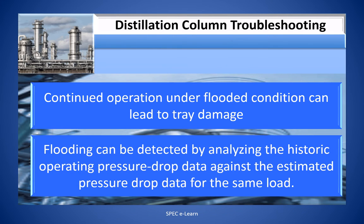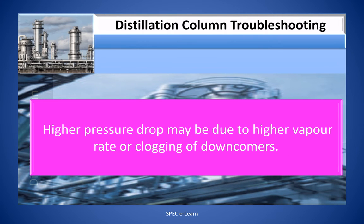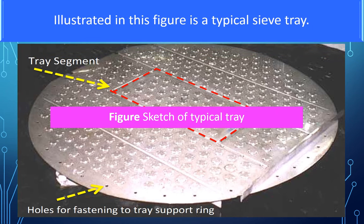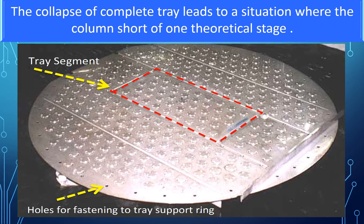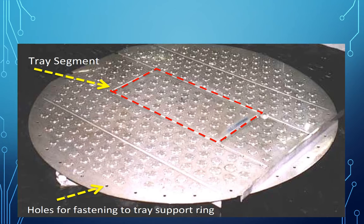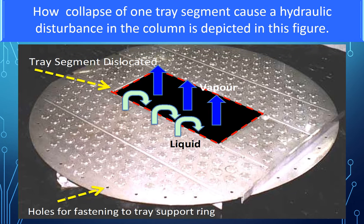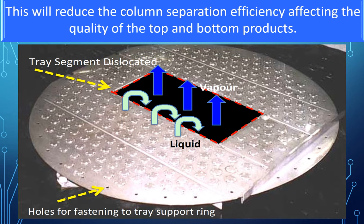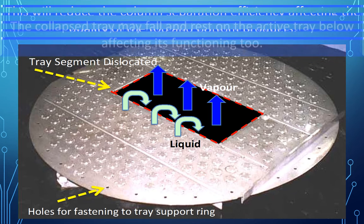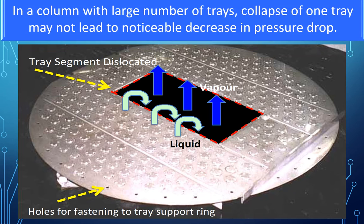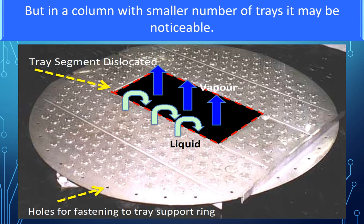Flooding can be detected by analyzing historic operating pressure drop data against estimated pressure drop data for the same load. High pressure drop may be due to high vapor rate or clogging of downcomers. The collapse of a complete tray leads to a situation where the column is short of one theoretical stage. How collapse of one tray segment causes a hydraulic disturbance in the column is depicted in figure illustrations. This will reduce column separation efficiency, affecting the quality of top and bottom products. In a column with a large number of trays, collapse of one tray may not lead to a noticeable decrease in pressure drop, but in a column with a smaller number of trays, it may be noticeable.